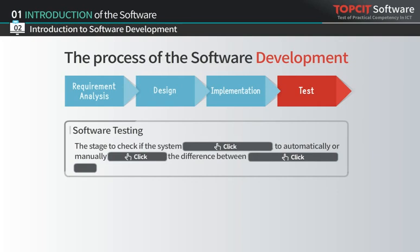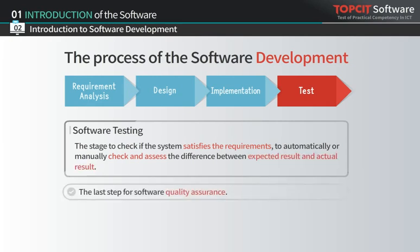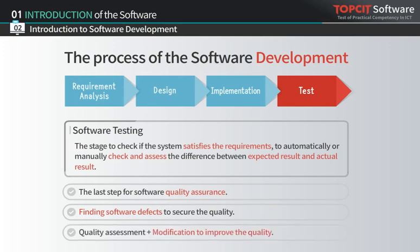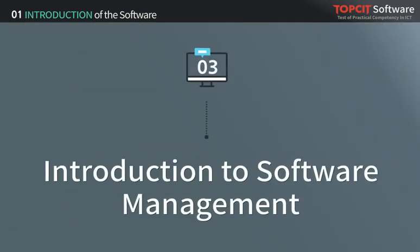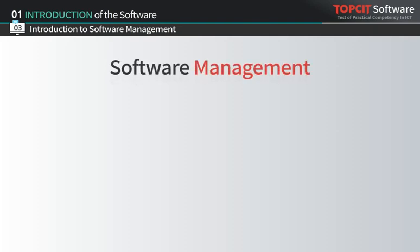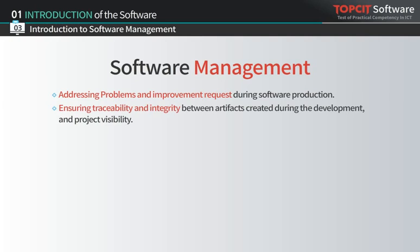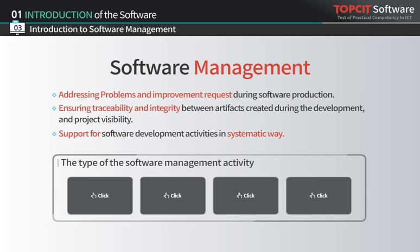One of the most important works during implementation is choosing the coding standard and creating code based on that standard. The software testing stage is the last step for software quality assurance, finding defects to ensure quality, and includes quality assessment and modifications for improvement. Software management is an activity that supports software development, addressing problems under production and improvement requests, ensuring traceability and integrity between artifacts, and supporting development activities systematically. There are four types of software management activities.